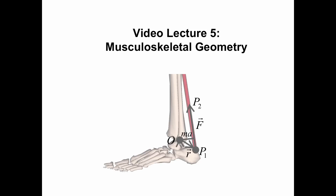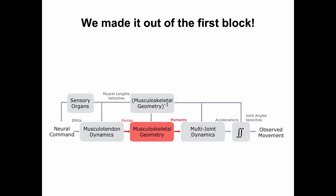Hi everybody. Welcome to the fifth video lecture where the topic is musculoskeletal geometry, one of my favorite topics in this class. So we finally have made it out of this first block of the famous flowchart diagram. We spent a fair amount of time understanding the transformation from EMG to muscle force, talking about things that influence muscle force all the way from activation dynamics to muscle architecture, force-length, force-velocity, all that stuff.